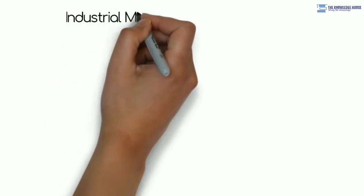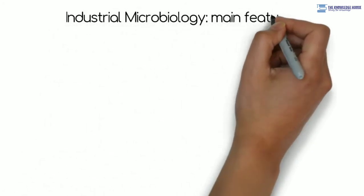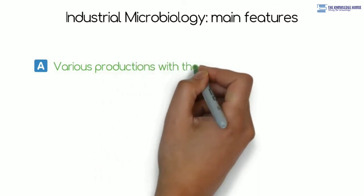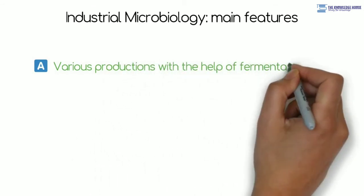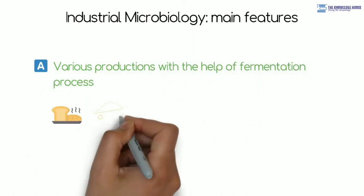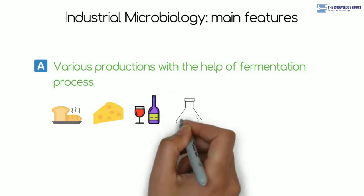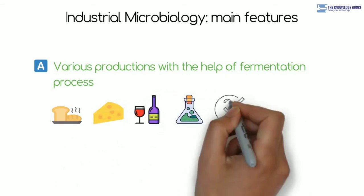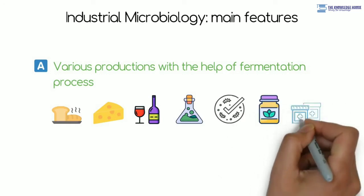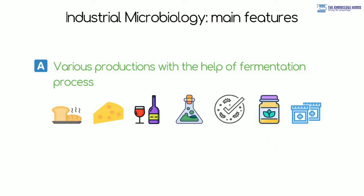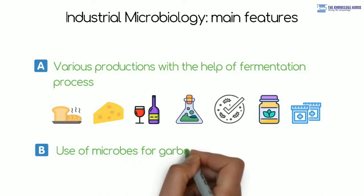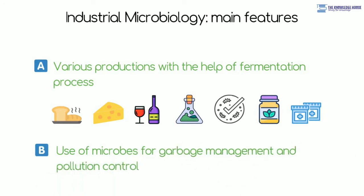Industrial Microbiology Main Features: a. Various productions with the help of fermentation process. Example: bread, cheese, wine, raw material for chemicals, enzymes, nutrients, medicines, etc. b. Use of microbes for garbage management and pollution control.